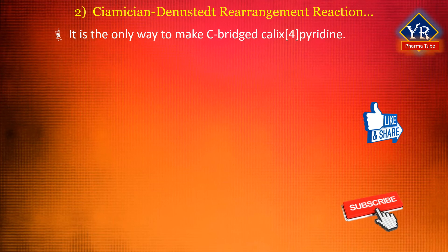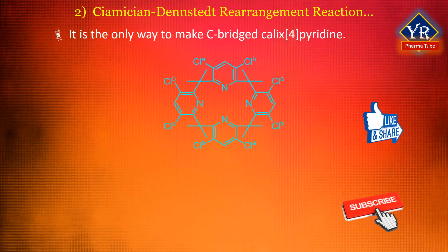Despite its rare usage, the Ciamician-Dennstedt reaction is the only way to date to make C-bridged calixpyridine. Four sequential treatments of calixpyridine with sodium trichloroacetate result in all four possible geometric isomers in 26% overall yield.